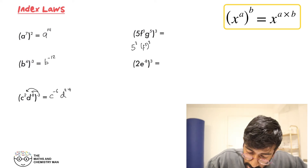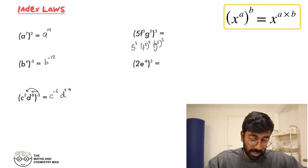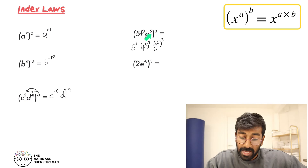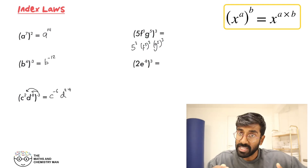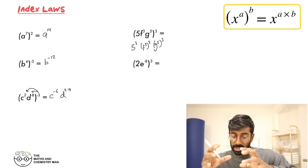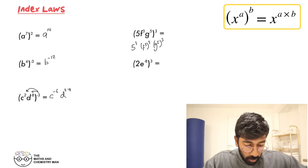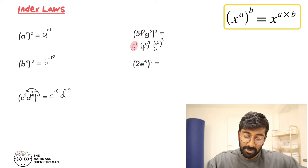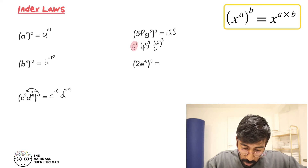We're going to go: 5 to the power of 3, then F to the 3 cubed, and then G to the 5 cubed. Everything in the bracket gets cubed individually. So 5 to the power of 3: 5 times 5 times 5 is 125.